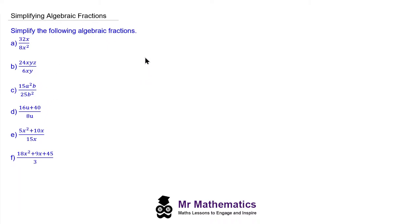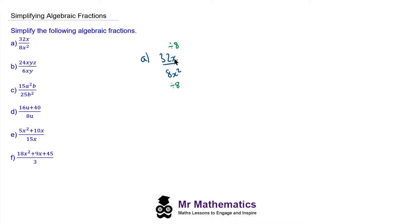We'll begin with question a where we have 32x over 8x squared. We need to identify the highest common factor of both numerator and denominator. You can see that 8 is a factor of 32 and 8, so we can divide both by 8. We can also see that x is a factor of x and x squared, so the highest common factor is 8x.